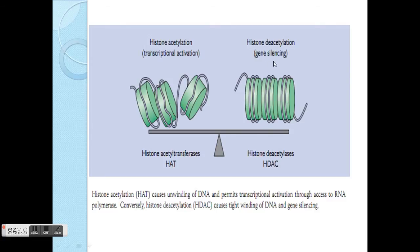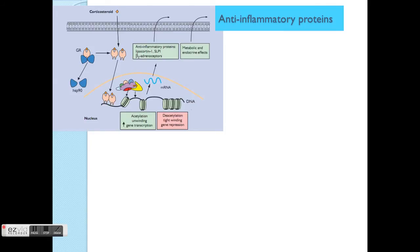The opposite process is called gene silencing, which is histone deacetylation involving histone deacetylase. When you don't need the information from a particular gene, you can silence it and wind up the DNA to keep it in a more compact form.